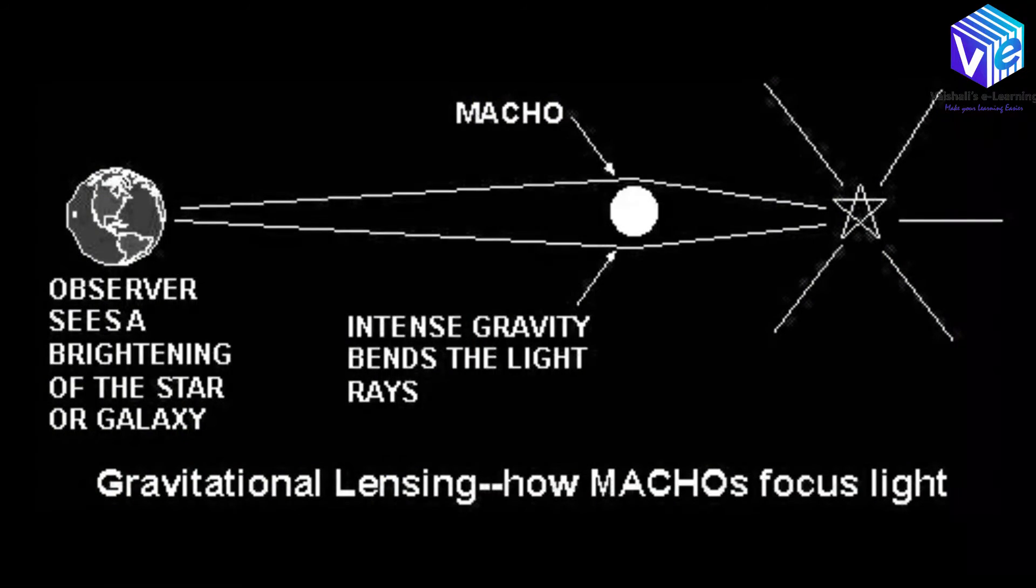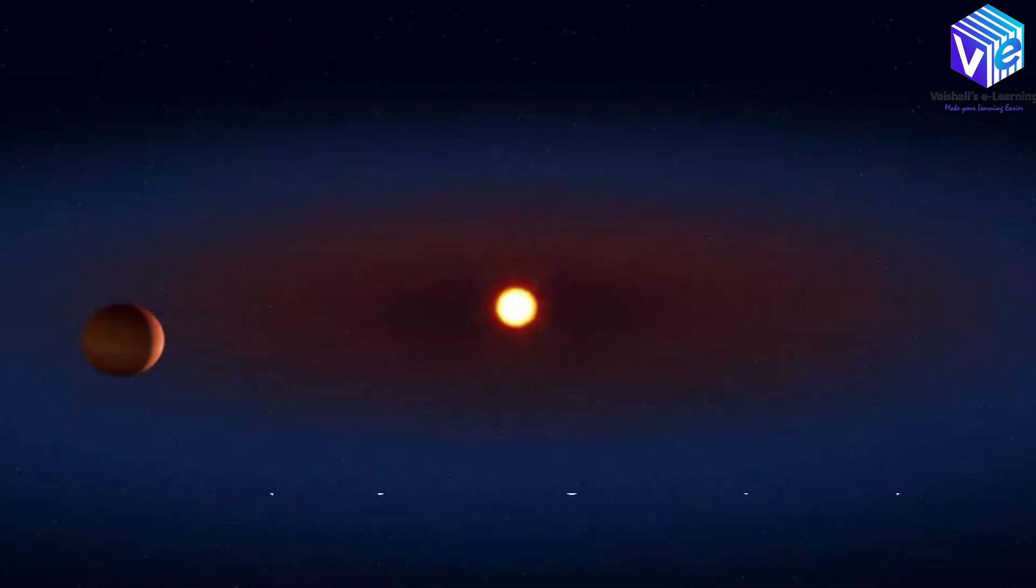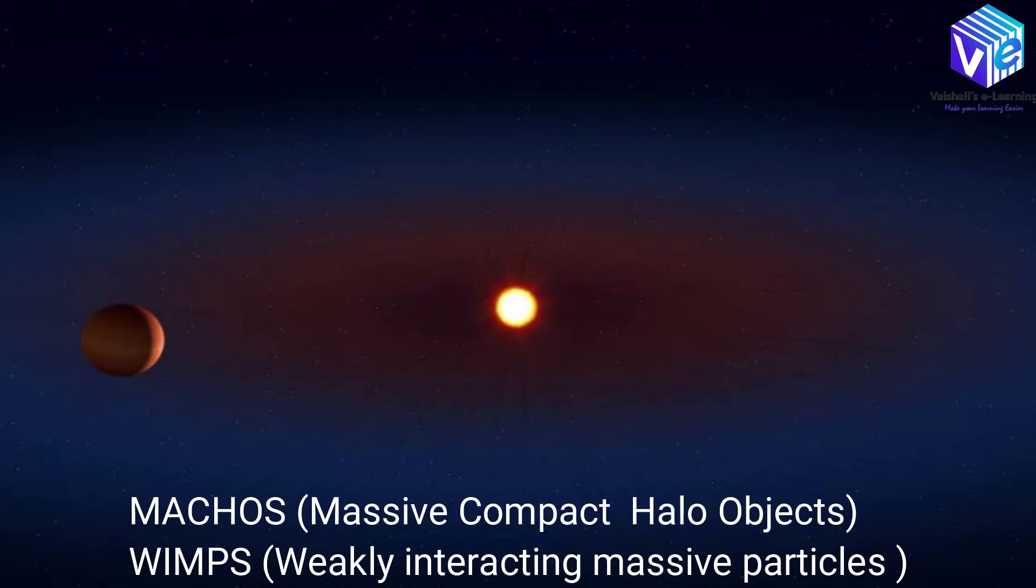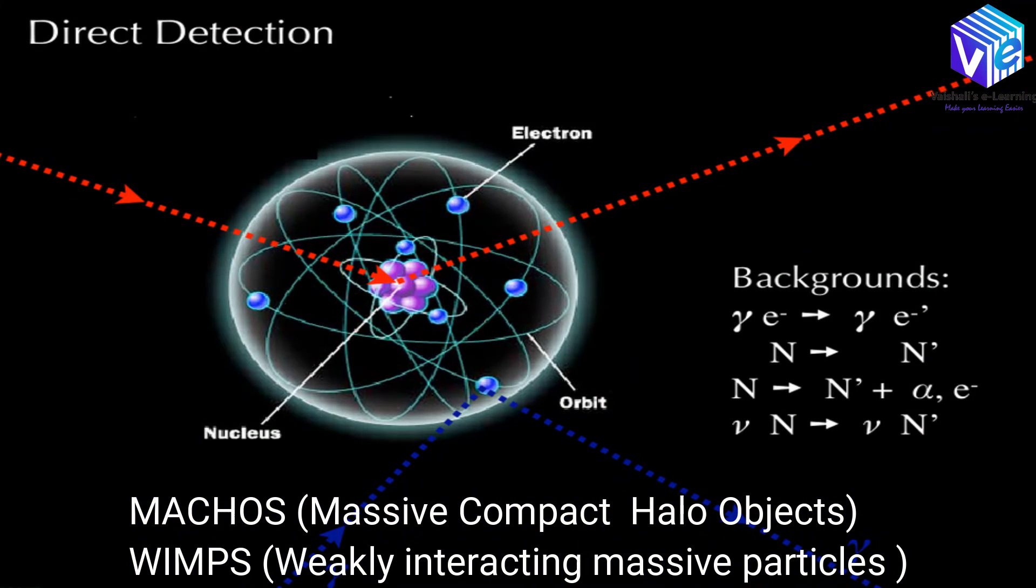There are two schools of thought on the existence of dark matter. While one school supports the idea of MACHOs, massive compact halo objects, the other advocates WIMPs, weakly interacting massive particles.